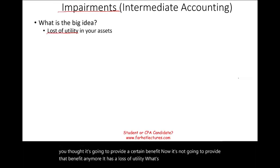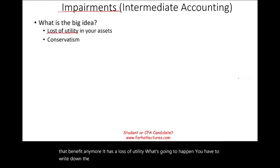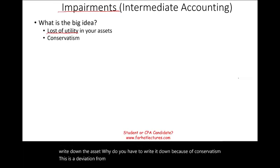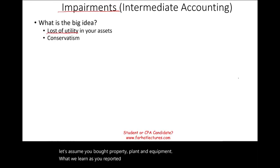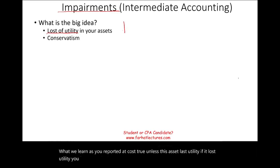What's going to happen? You have to write down the asset. Why? Because of conservatism. This is a deviation from the historical cost principle. When you buy property, plant, and equipment, you report it at cost — unless the asset lost utility. If it lost utility, you have to write it down. This is accounting conservatism.